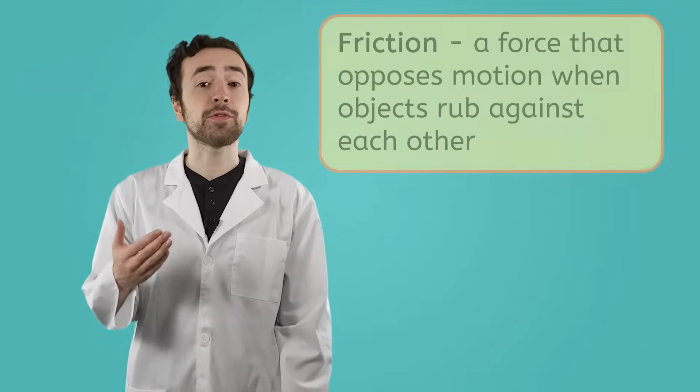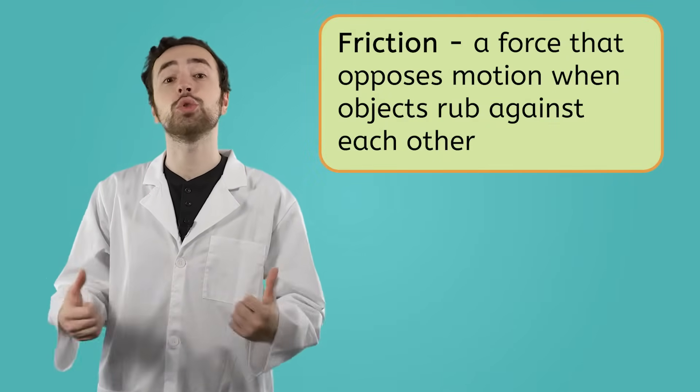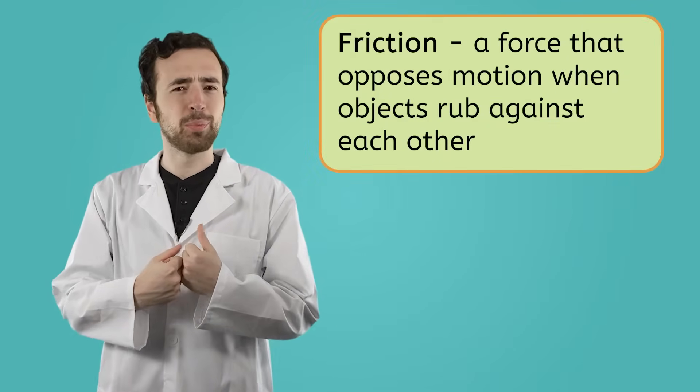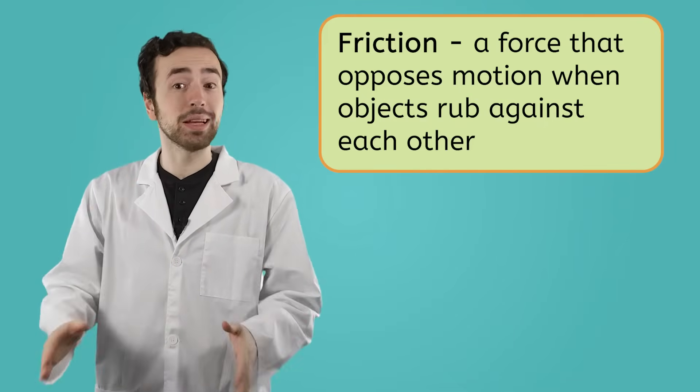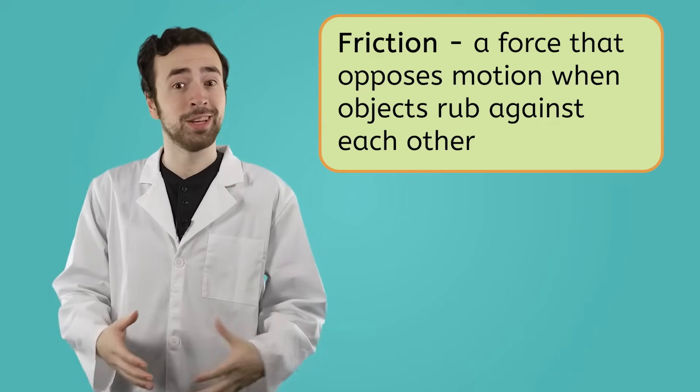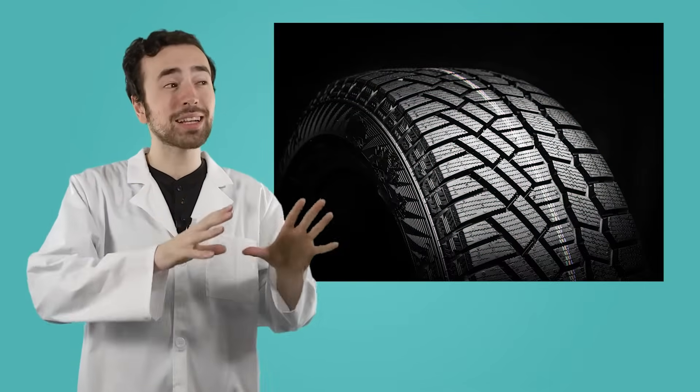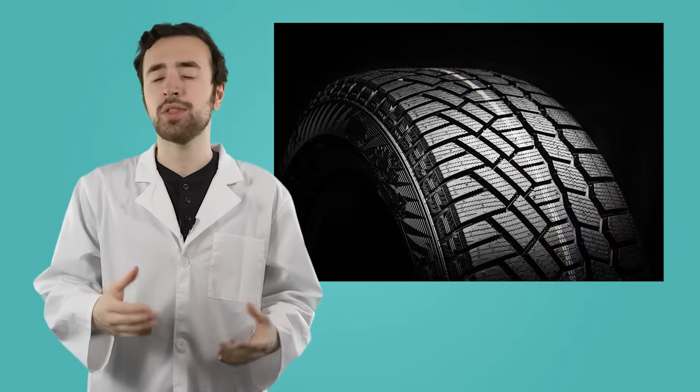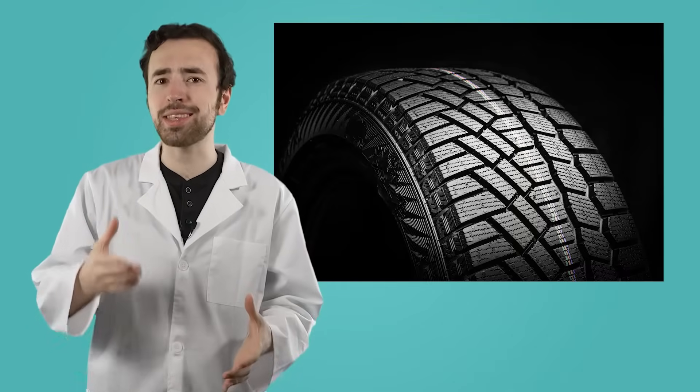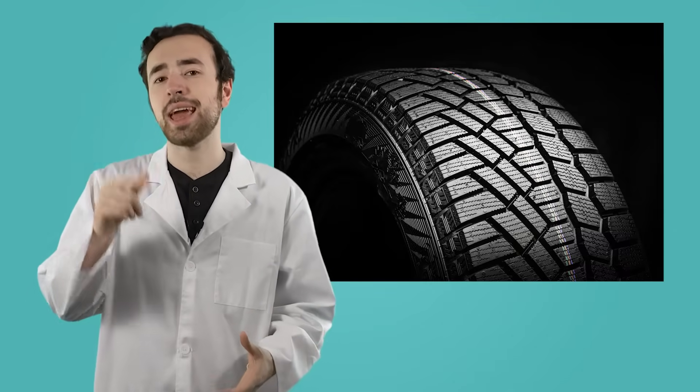So friction is a force that opposes motion that occurs when two objects rub against each other. Now, opposing motion might seem like a bad thing, but there are plenty of times where we want lots of friction just to go about our everyday lives. Take cars, for example. You might think that driving a car is one of those times where you don't want anything slowing you down, but the truth is, without friction we would not be able to control a car's movement at all. In fact, cars' tires have lots of little grooves in them, called treads, that are designed to increase the amount of friction between the tire and the road.